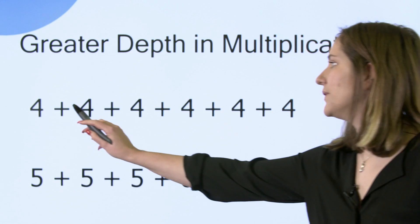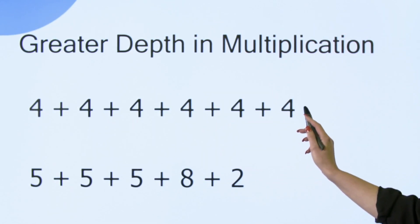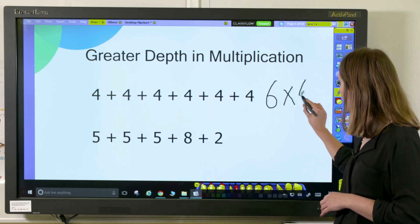So in this first example there's one, two, three, four, five, six fours, so I can rewrite it as six multiplied by four.